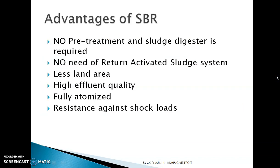The advantages of SBR include: no pre-treatment of raw sewage is required, meaning no primary sedimentation tank and no sludge digester are needed, because the wasted sludge removed from the SBR is of high quality and can go directly to a sludge thickener for drying. There is also no need for a return activated sludge system, as in conventional ASP, because the activated sludge remains in the SBR itself.